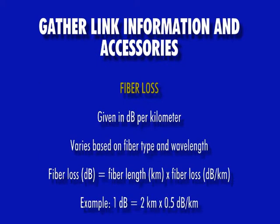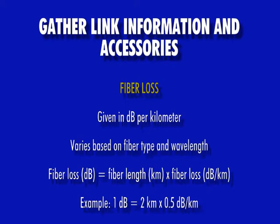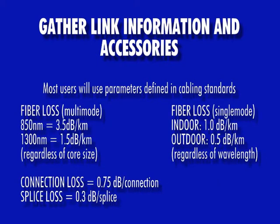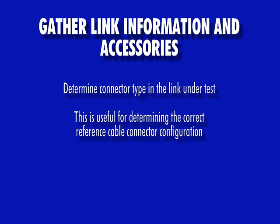Fiber loss is given in dB per kilometer and varies based on the fiber type and wavelength. To calculate fiber loss, multiply the fiber length in kilometers by the fiber loss. Connection loss is the number of connections multiplied by the dB loss per connection. Splice loss is the number of splices multiplied by the dB loss per splice. Most users will follow the fiber, connection, and splice loss specified in cabling standards such as TIA 568. It is also helpful to determine the connector type used in the link under test, which will help determine the right reference cable configuration to use.